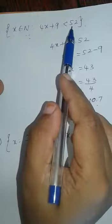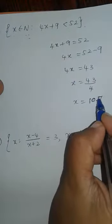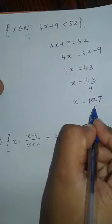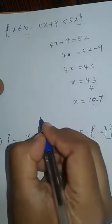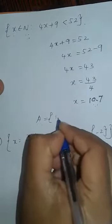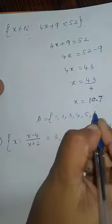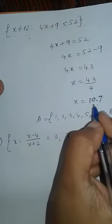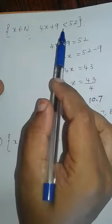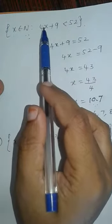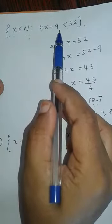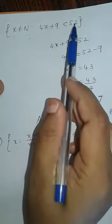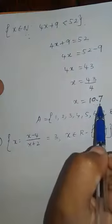The condition requires the value to be less than 52, so we take X values less than 10.7. Natural numbers start from 1, so valid values are 1, 2, 3, 4 up to 10. For example, if we take X equals 11: 4 times 11 is 44, and 44 plus 9 is 53, which is greater than 52 — so the condition fails. Therefore we take values up to 10 only.